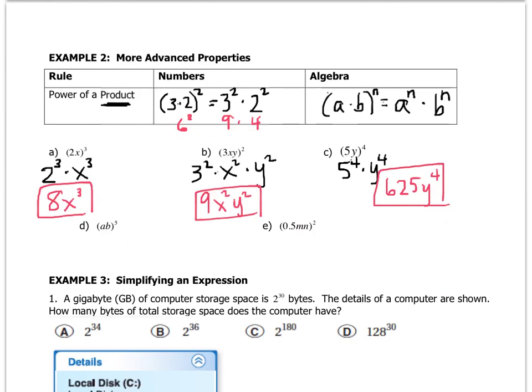All right, here it is. This is going to be a to the 5th, b to the 5th. There's nothing really to do because there are no numbers. And this is 0.5 squared m squared n squared. So 0.5 squared is 0.25. m squared n squared is my final answer.